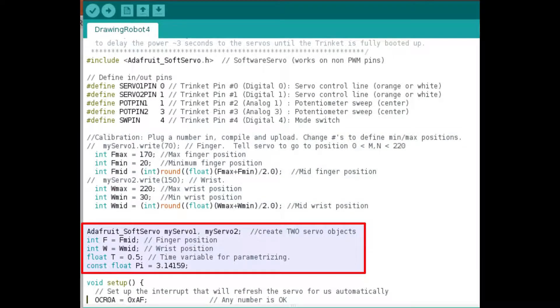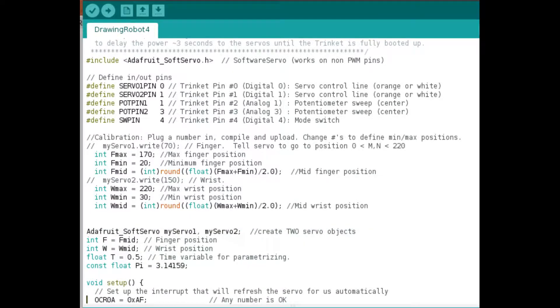And then we start to initialize the servo motor with the two objects. And then we're down into a void set up here, which is the next picture.